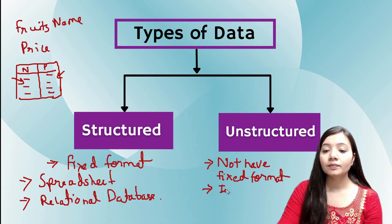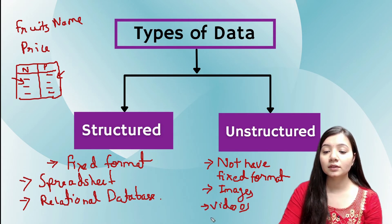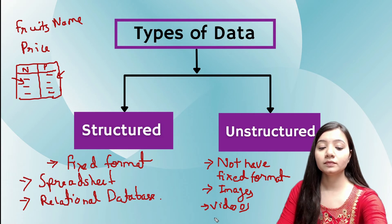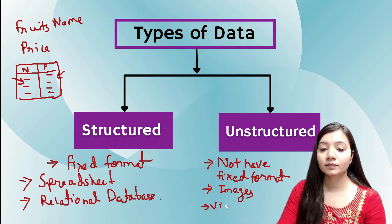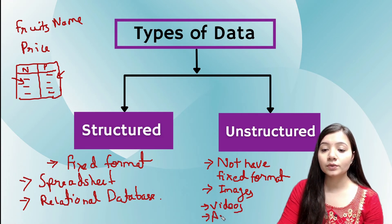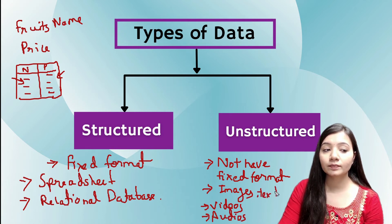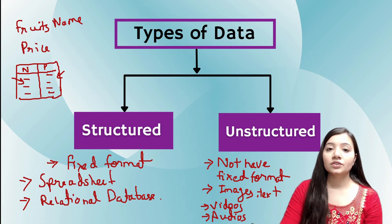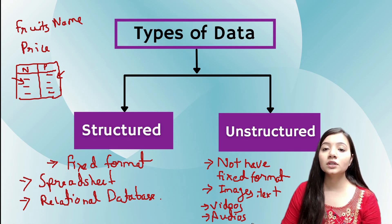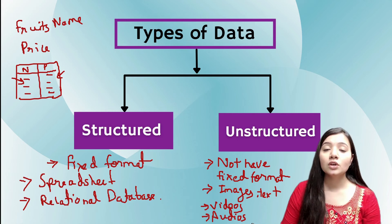Now talking about unstructured data, examples of these are images, videos, audios, or also text. These are the examples of unstructured data. I hope you understood data based on structured and unstructured categories.